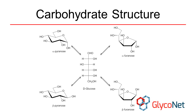Turn your attention now to the hydroxyl group on carbon-1 in the pyranose forms, and you'll notice that it can be oriented either axially or equatorially. These different forms are called anomers, and we'll discuss how to assign them as alpha or beta in a few minutes.